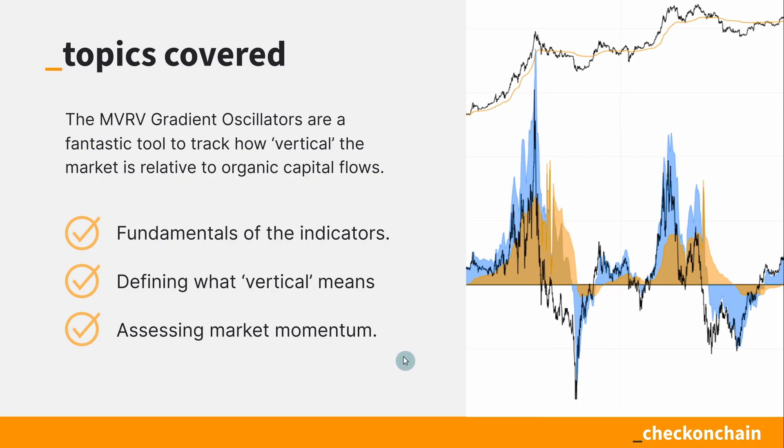Lastly, we're going to use these tools to actually assess market momentum and where we currently are. We're currently correcting — I'll just check my block clock right now, 66,300. So we are down a little bit from the peak, not too far from where we recorded the video the other day. Let's have a look at and understand the fundamentals of what these tools are and how we can use them to assess momentum.